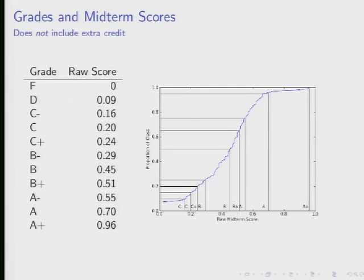Here's a picture of the cumulative distribution — the empirical cumulative distribution of scores on the exam. On the vertical axis is the proportion of the class that got a score at least as high as the point on the horizontal axis. So a little bit more than 60% of you got a score lower than 0.6.